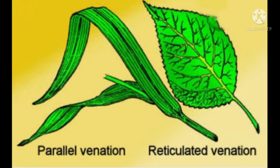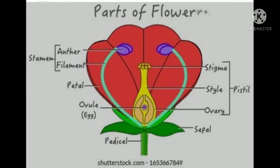The main function of leaves is to prepare food for the plant by the process of photosynthesis. Photosynthesis is a process in which plants prepare their food in the presence of carbon dioxide, water, and sunlight, with the help of chlorophyll.